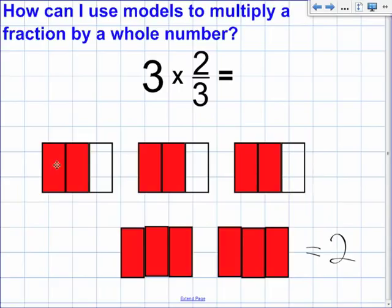You could also count the thirds. One-third, two-thirds, three-thirds, four-thirds, five-thirds, six-thirds. Six divided by three also gives you the same answer, which is two.